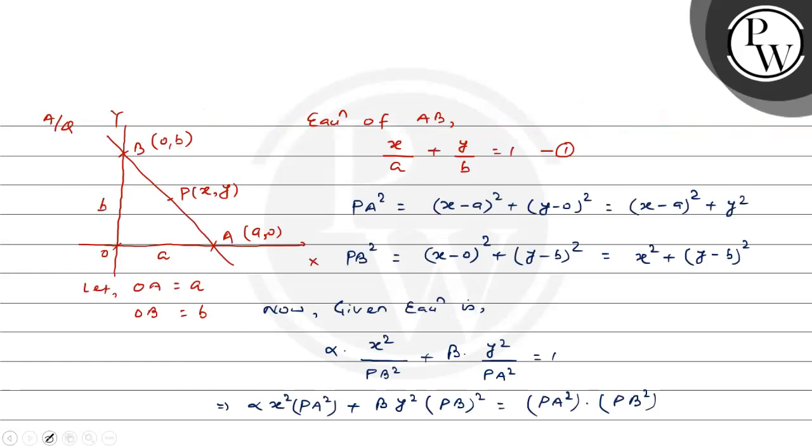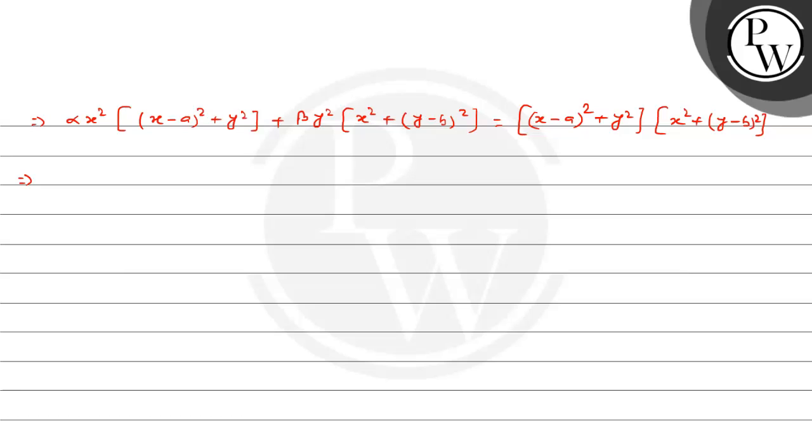We have to find the value of α + β. Equating coefficients of x⁴ and y⁴: coefficient of x⁴ is α (from x² · x²), which equals 1. Coefficient of y⁴ is β (from y² · y²), which equals 1. Thus, we get α = 1 and β = 1. Therefore, α + β = 1 + 1 = 2.